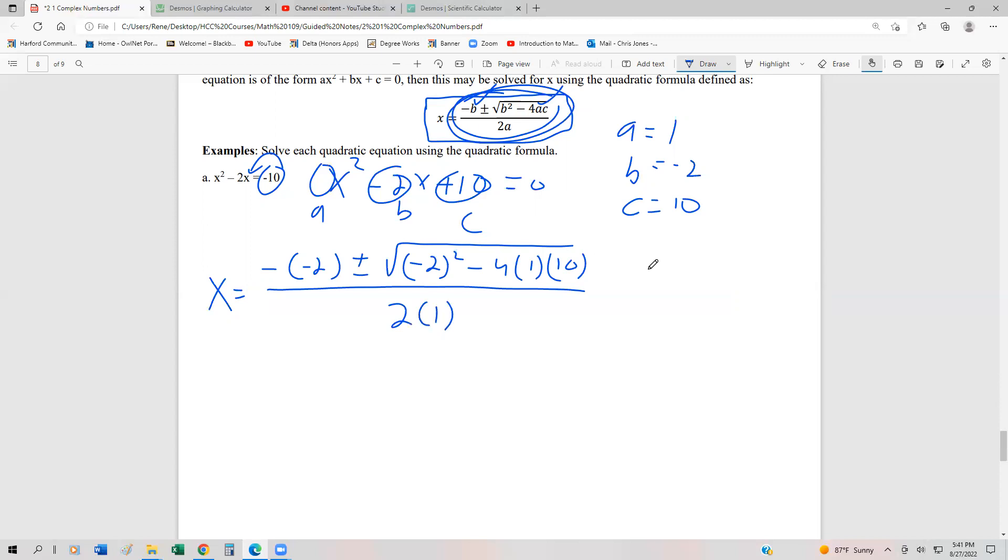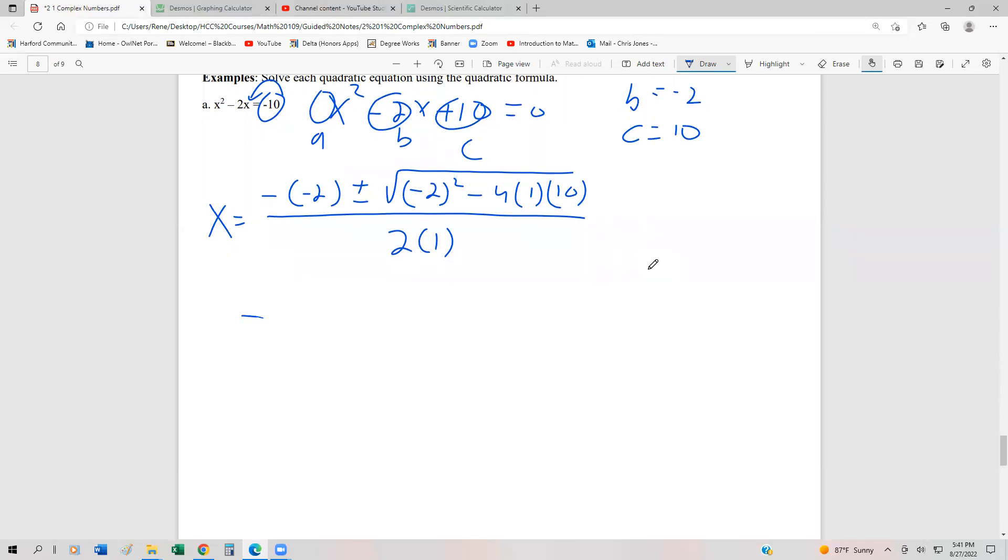Now we simplify. The opposite of negative 2 is positive 2. Under our radical, negative 2 squared is 4. 4 times 1 is 4. 4 times 10 is 40. And there's a minus sign, so it's negative 40. 2 times 1 is 2.